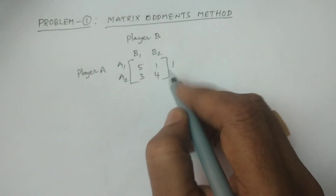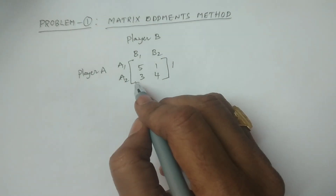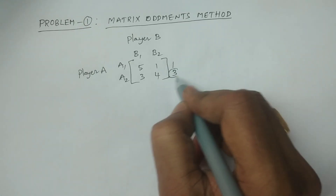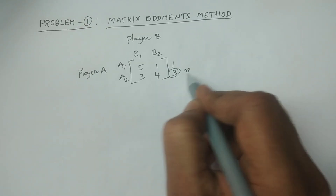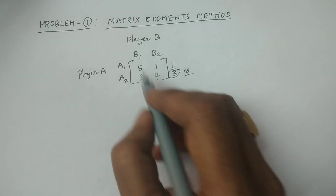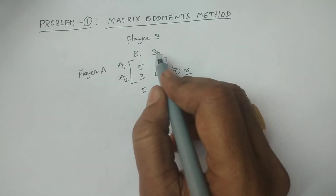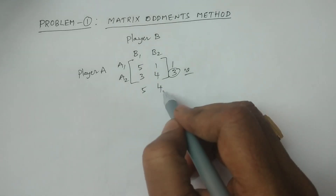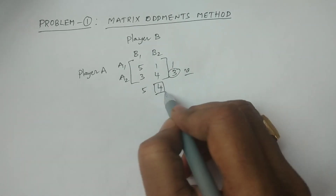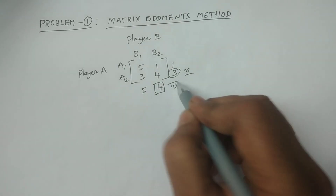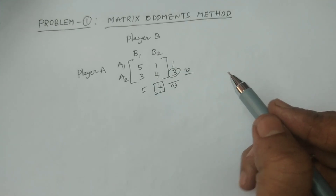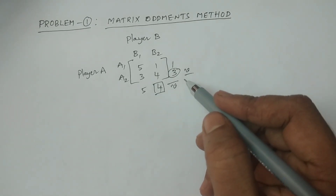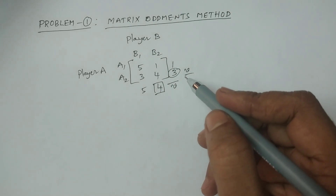Row minimum: Row 1 minimum is 1, Row 2 minimum is 3. The maximum of these is 3 — this is the Maximin value. Column maxima: Column 1 maximum is 5, Column 2 maximum is 4. The minimum of these is 4 — this is the Minimax value. Since Minimax value and Maximin value are not equal, no Saddle Point exists.